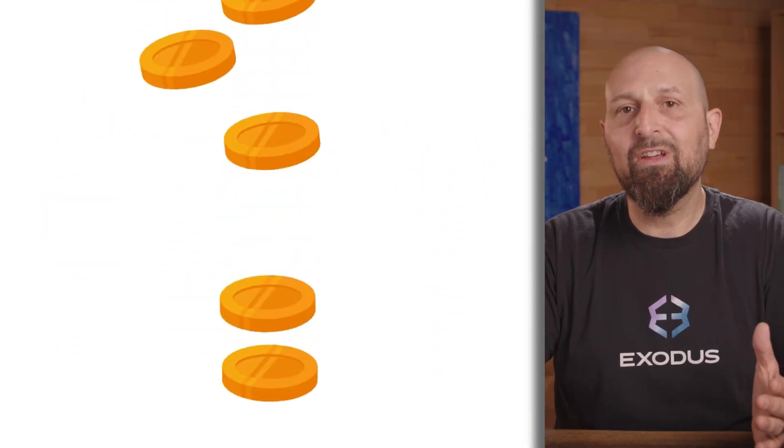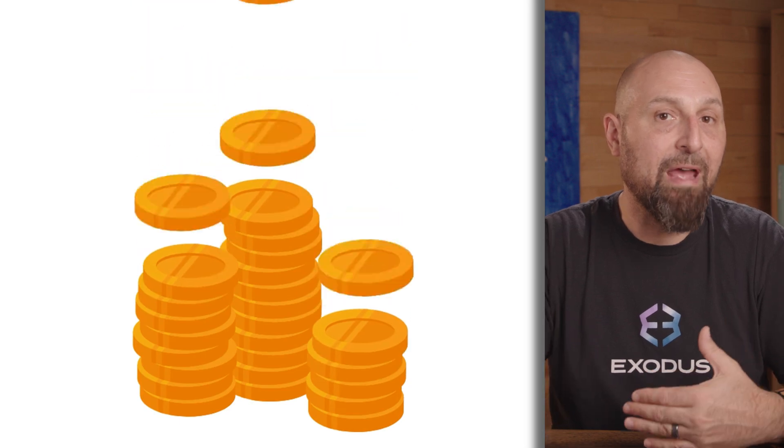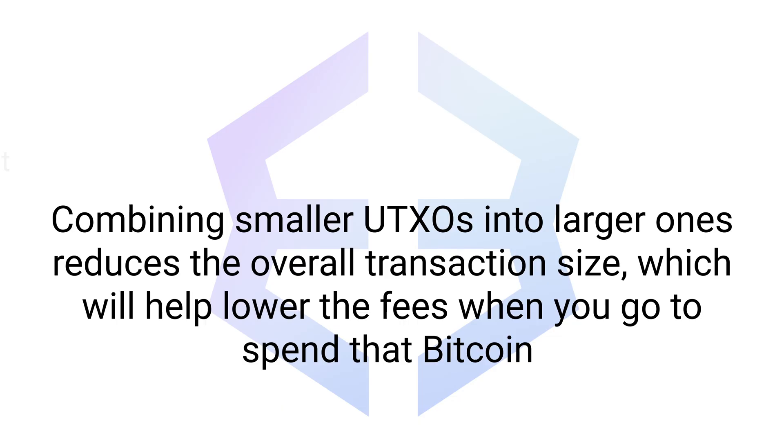You can think of it as either paying for something with 100 pennies or a $1 bill. Although they both have the same value, counting and using 100 pennies is a lot more work. This is why properly managing UTXOs in your wallet by consolidating them is so important.